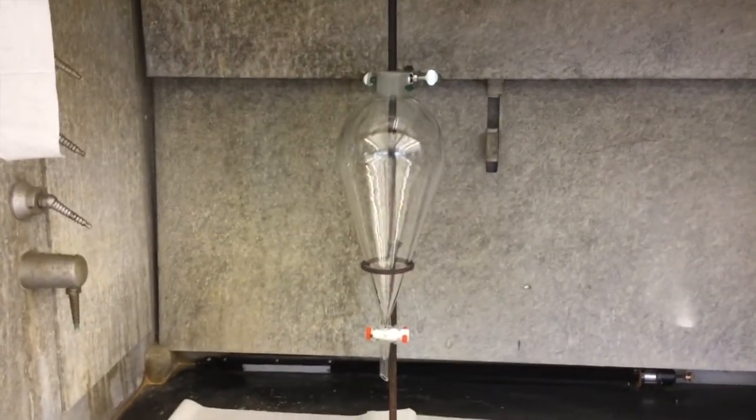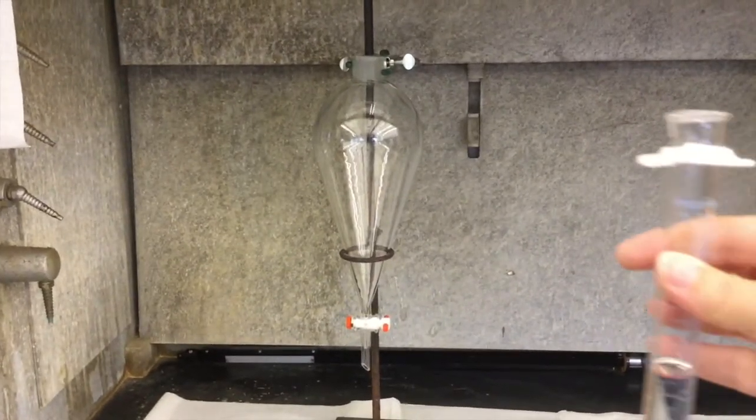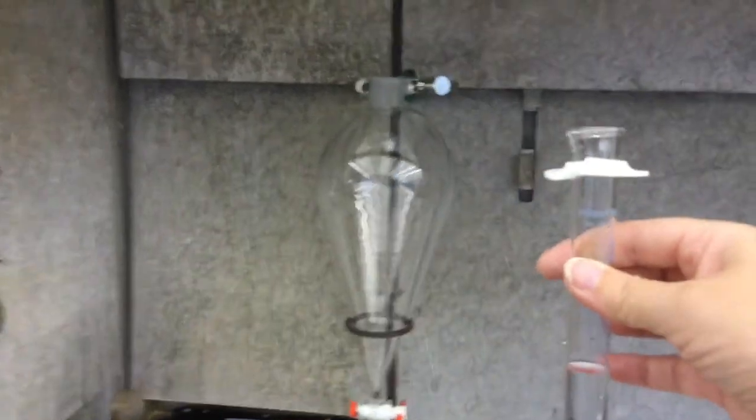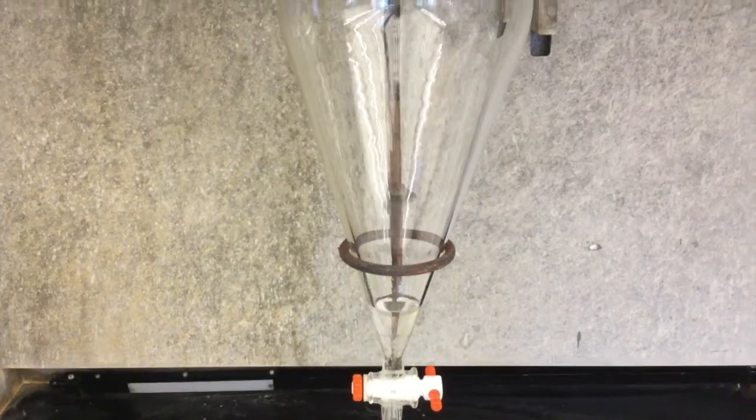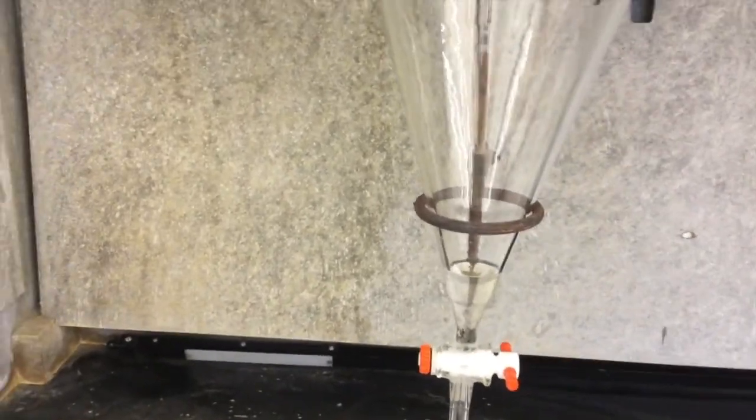Once you have made your measurements, take your graduated cylinder into the hood and pour the ice and the hexanes into the separatory funnel. The layer that is aqueous with water will separate out from the hexanes and will be able to separate the two in mass.